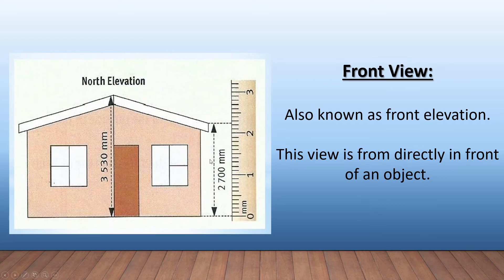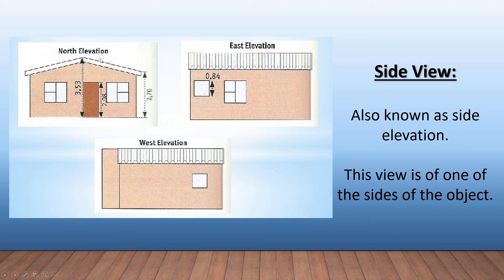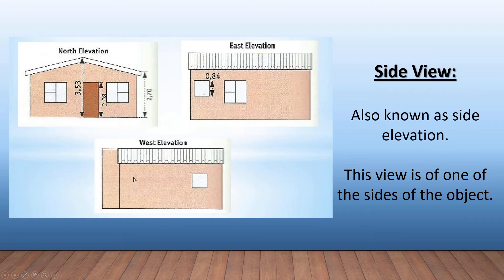When we look at the same object from the side, this is our side view, also known as the side elevation. Sometimes they'll say east and west elevation — it doesn't matter which one they use, it's still looking at it from the side. This is the roof, because we are now standing on the side of the house looking at it from this angle. The west side is just the other side of the house. So that's our front view and that's our side view.